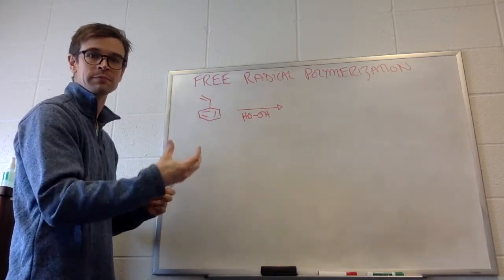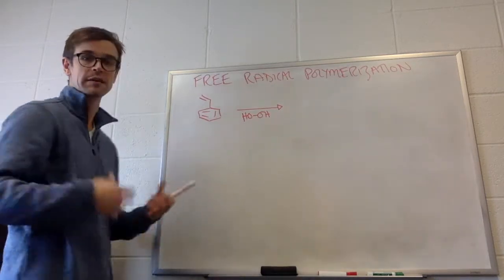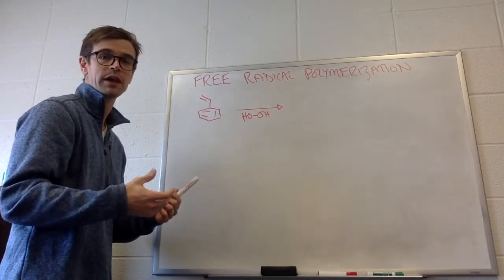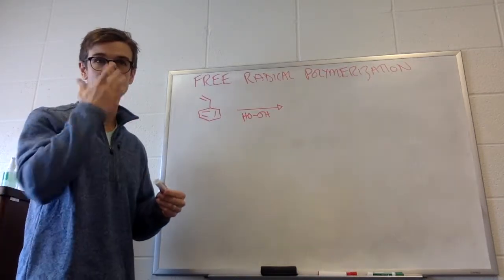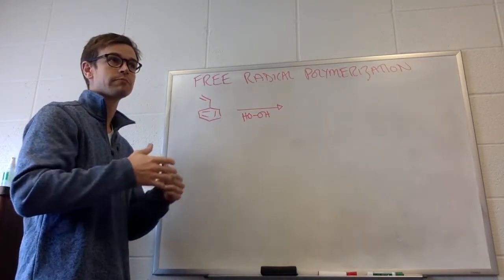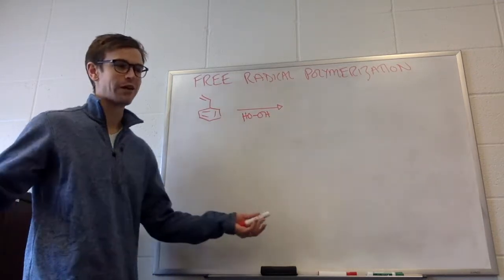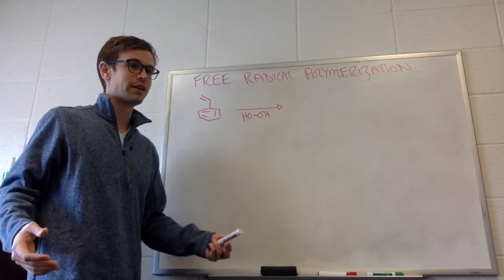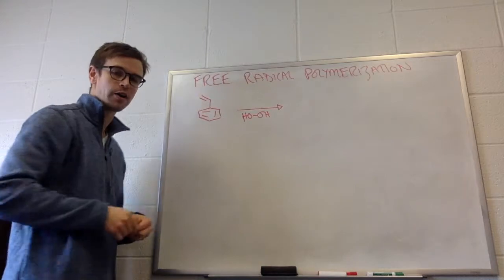Poly means many. So one of these is going to come together with many of these to make a polymer. And this is called styrene. Polystyrene is a very common polymer, ubiquitous through every type of plastic that is out there. And it's all made of these monomers.